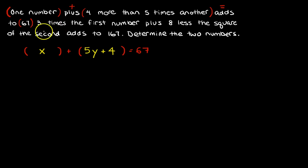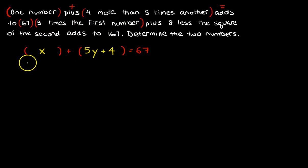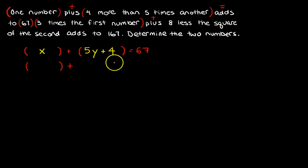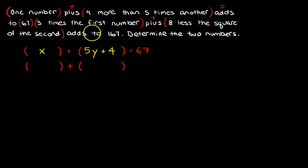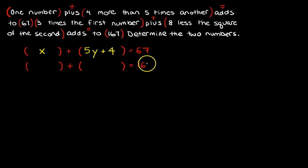Let me see the next line. Three times the first number — I'm going to put that down. Plus — there's another plus. Eight less the square of the second — I don't know what that is yet. Adds to — I know what that means — that's 167. So: adds to 167.